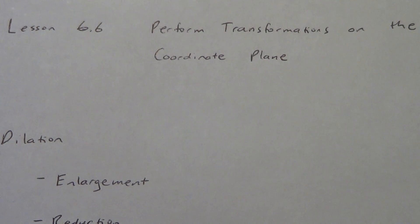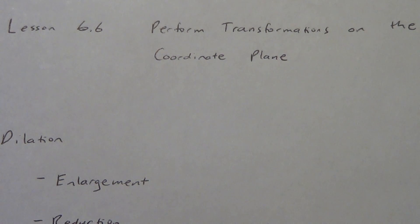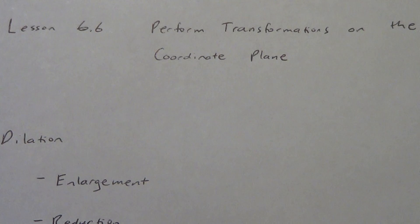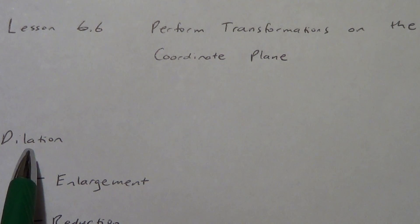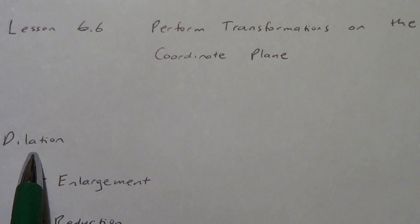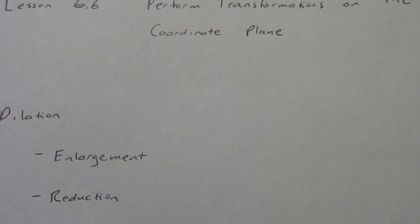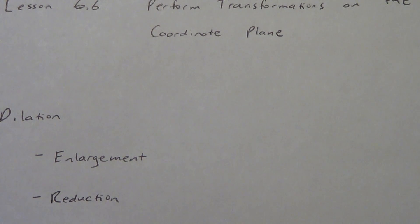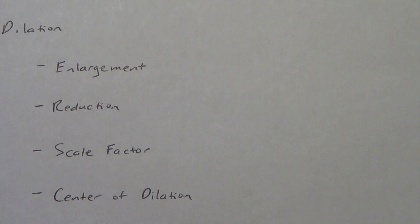Lesson 6.6, the last lesson in Chapter 6, and we are going to be performing transformations on the coordinate plane. We did this in a previous chapter when we were talking about reflections, rotations, and translations, but in this one we're going to focus primarily on dilations. We talked about two different types of dilations: enlargements and reductions, and a couple other terms — scale factor and center of dilation. So let's review those real quick.